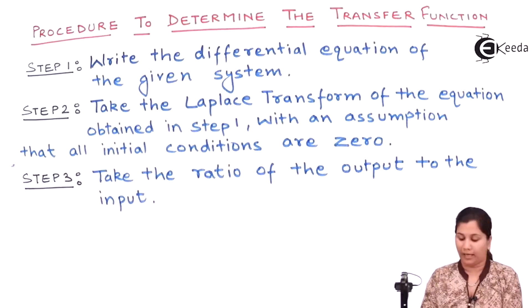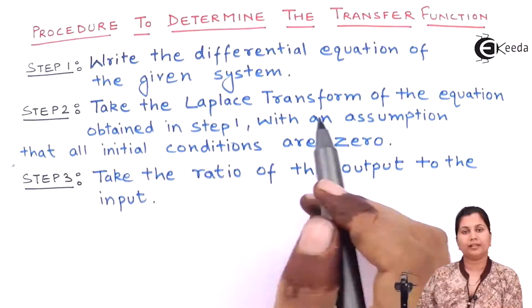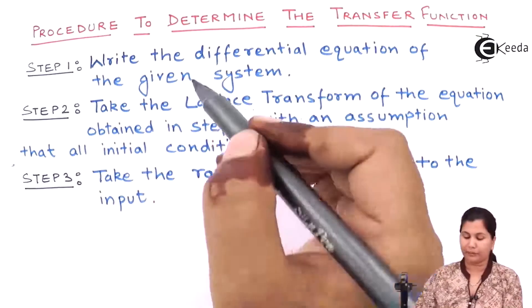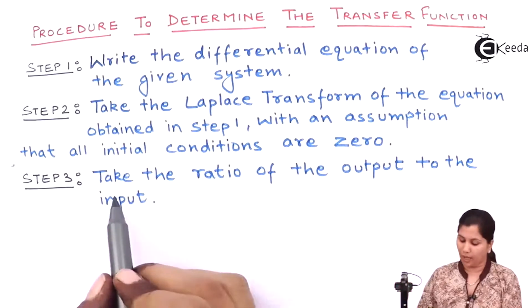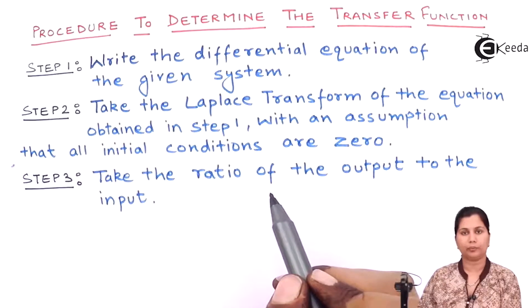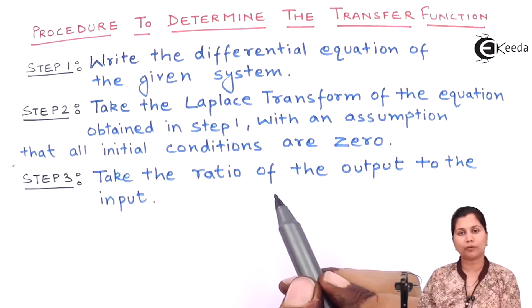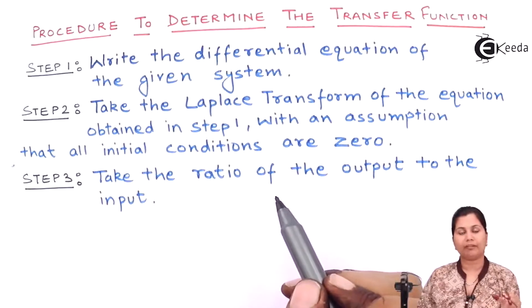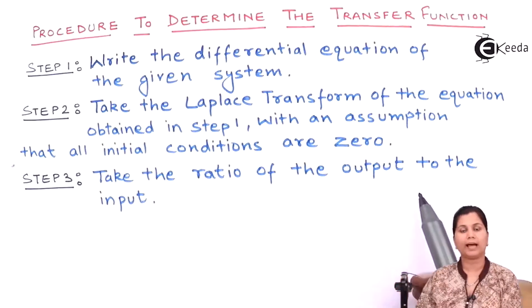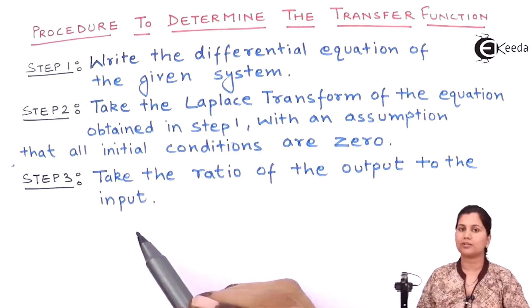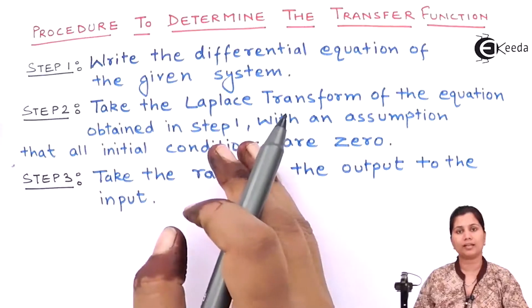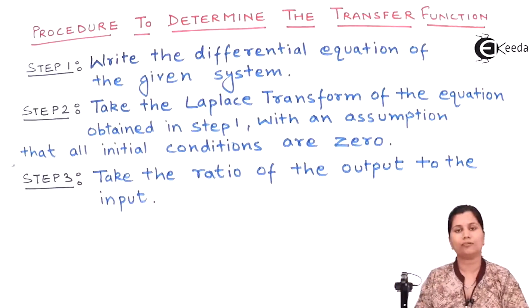Now in step 3, take the ratio of the output to the input. In the second step you have taken the Laplace transform of the equation obtained in step 1, with the assumption that all initial conditions are zero. So now take the ratio of the output and the input. You have to first understand what is the output of the system and what is the input of the system. When you know the input and the output, try to take the ratio of the output to the input. You will get the ratio of the Laplace transform of the output and the Laplace transform of the input, which aligns with the assumption defined in the definition of the transfer function.